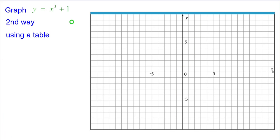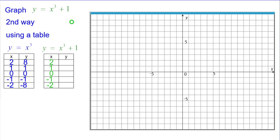Our second way is using a table. So we'll use this table of values for our normal y equals x cubed. And we're going to add one to each of the y coordinates because that's what it says to do in the equation.